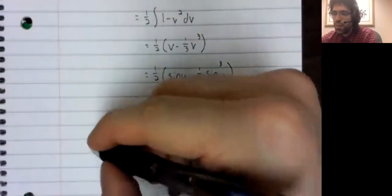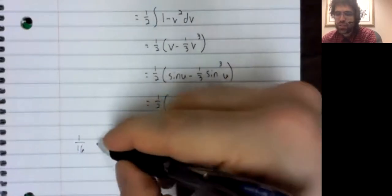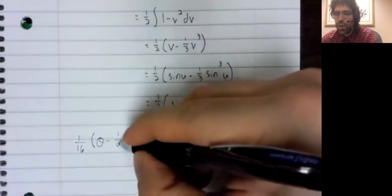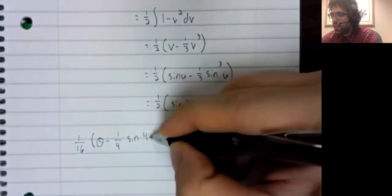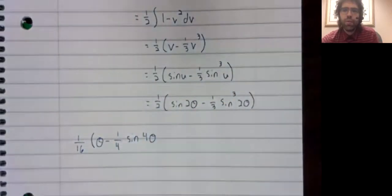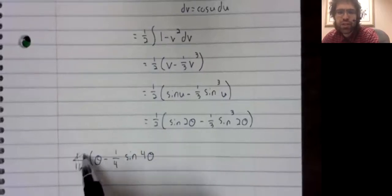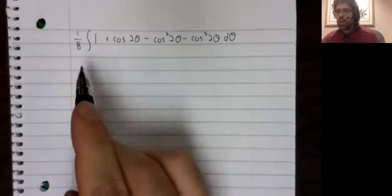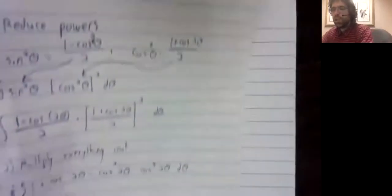When we put these things together, we wind up with one sixteenth times theta minus one fourth times the sine of four theta. No, sorry, I've changed my mind. I mean, this is correct. But let's show this in a little more detail. We've got one eighth times this integral. And plugging in our work.